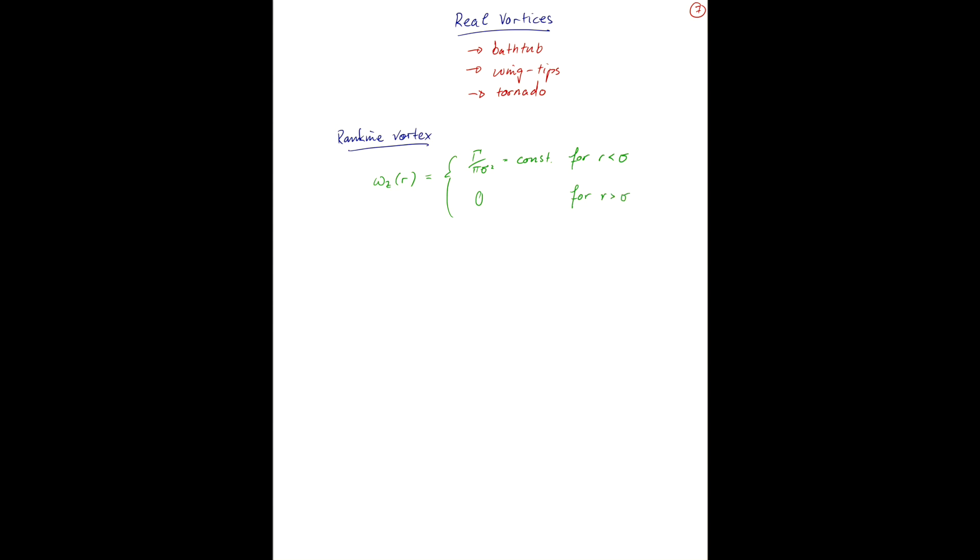The reason why you would do that is because in reality, you won't have infinite vorticity at the origin as we had in the ideal vortex. When you define your vorticity like this, you get solid body rotation for small radius less than sigma, which is sensible near the center of rotation for the vortex. At far distances, you have an irrotational vortex, which is more reasonable because otherwise your velocity field becomes really large as it scales with the radius.